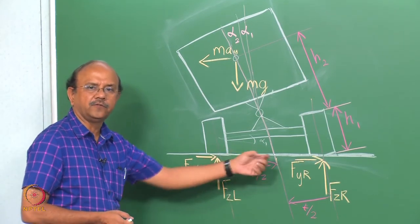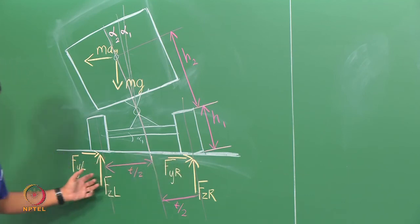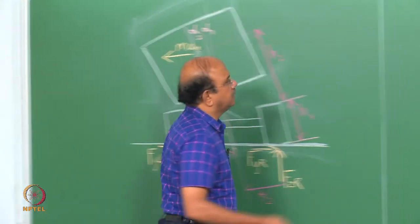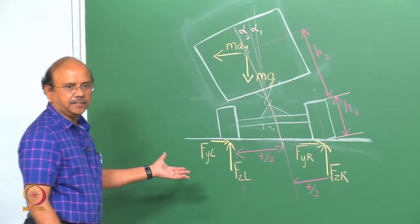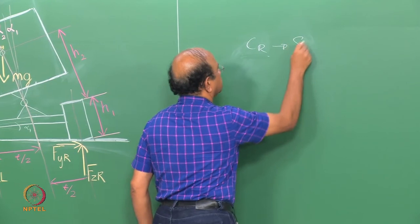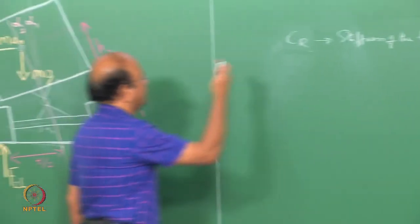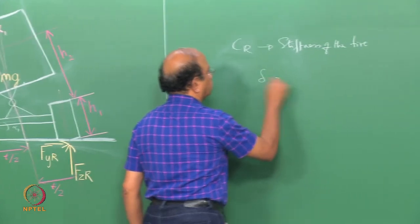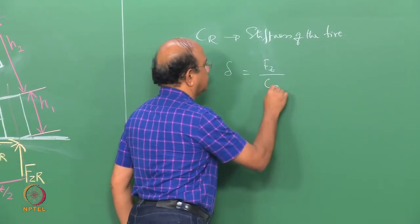When the vehicle rolls, there is going to be a difference in the load carried by the outer and inner (left and right) sides. If there is a radial stiffness to the tyre — call it C_R — then the deformation of the tyre is given by the load divided by this stiffness.